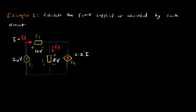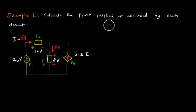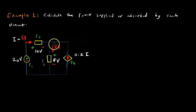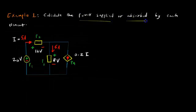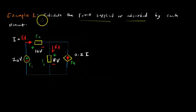I have an example here and it says calculate the power supplied or absorbed by each element in this circuit. We first have to remember that we have two different types of power for these basic elements — either it's going to be supplied or it's going to be absorbed. If it's supplied, the element is behaving like a power supply. If it's absorbed, it's like a resistor dissipating power.